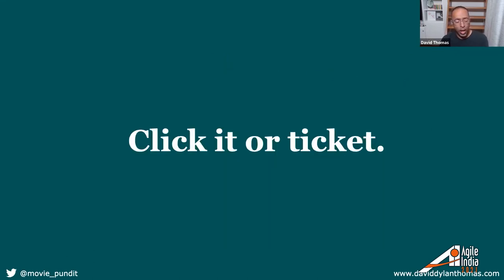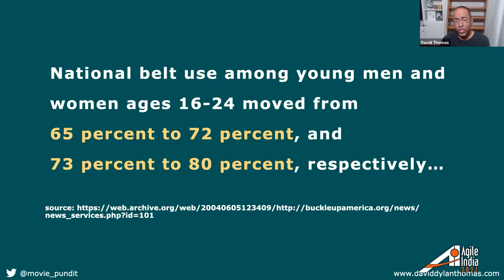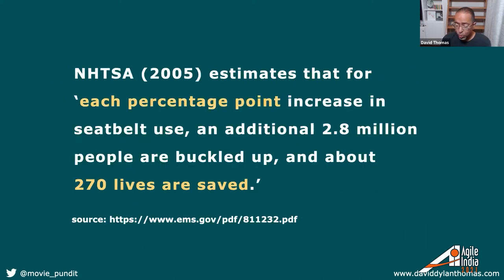Let's talk about 'Click It or Ticket.' In the States, laws were passed saying if you don't buckle your seatbelt, you can get a ticket. The legislation on its own worked pretty well, especially with older drivers, but not as much with younger drivers. So they rolled out 'Click It or Ticket,' and national belt use among young men and women aged 16 to 24 moved from 65% to 72% and 73% to 80% respectively. For every percentage point you go up in seatbelt use, about 270 lives are saved — so doing the rough math, that's about 4,000 lives saved in part through rhyming. It is silly, but it works.